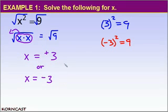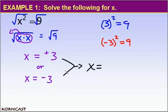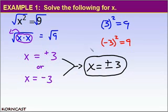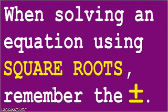Mathematicians have a fancy way of writing this. Instead of writing two separate answers, we write one answer using the plus or minus symbol — a plus sign on top of a minus symbol. Since both values are 3, we write x equals plus or minus 3. This is the preferred way to write our answer. When solving equations using square roots, please remember the plus or minus symbol.